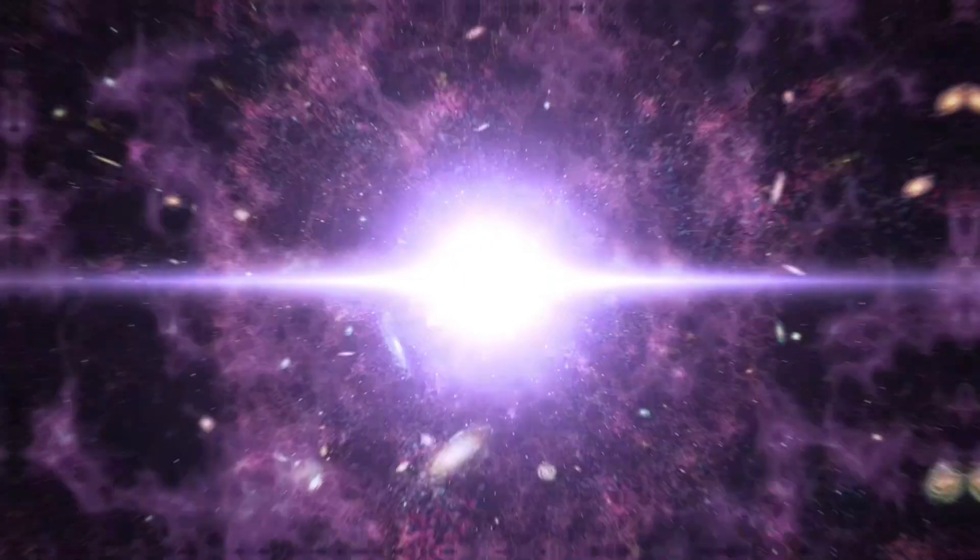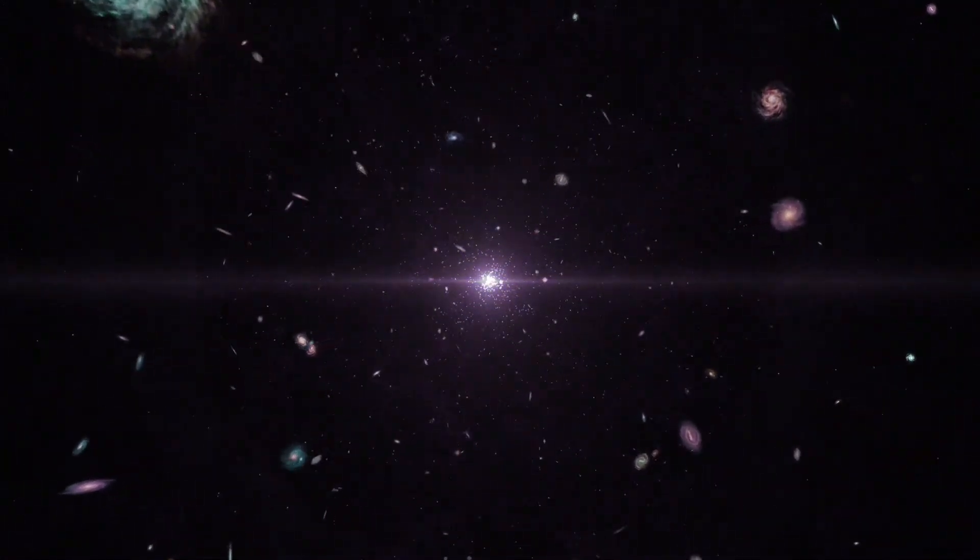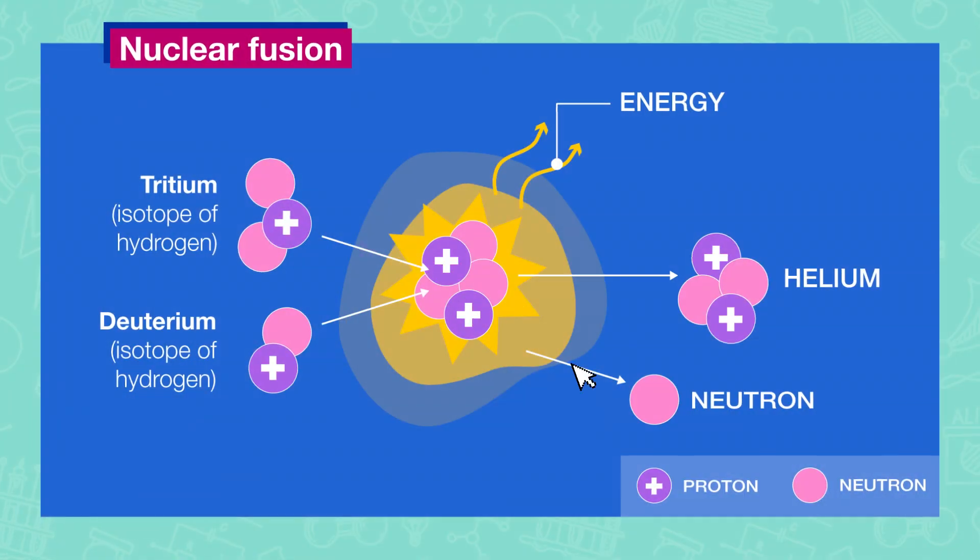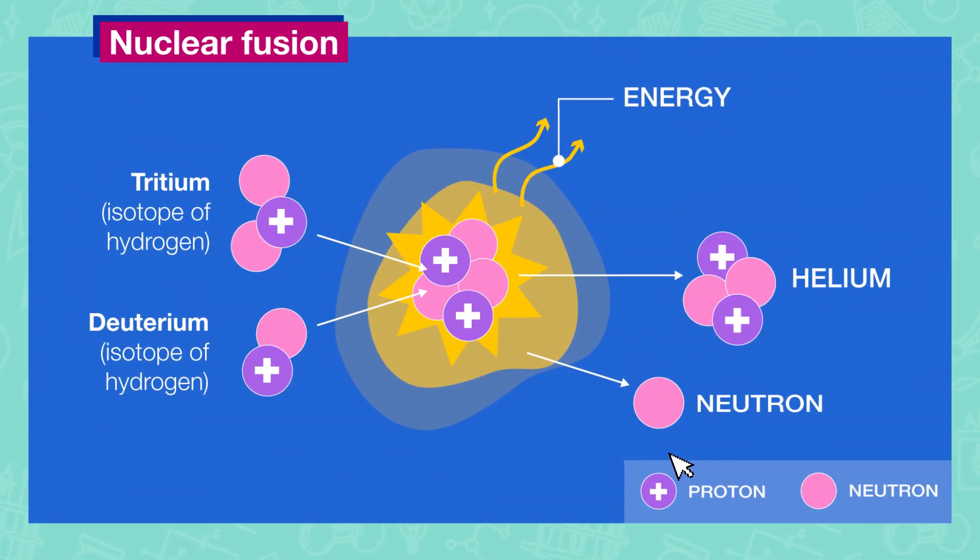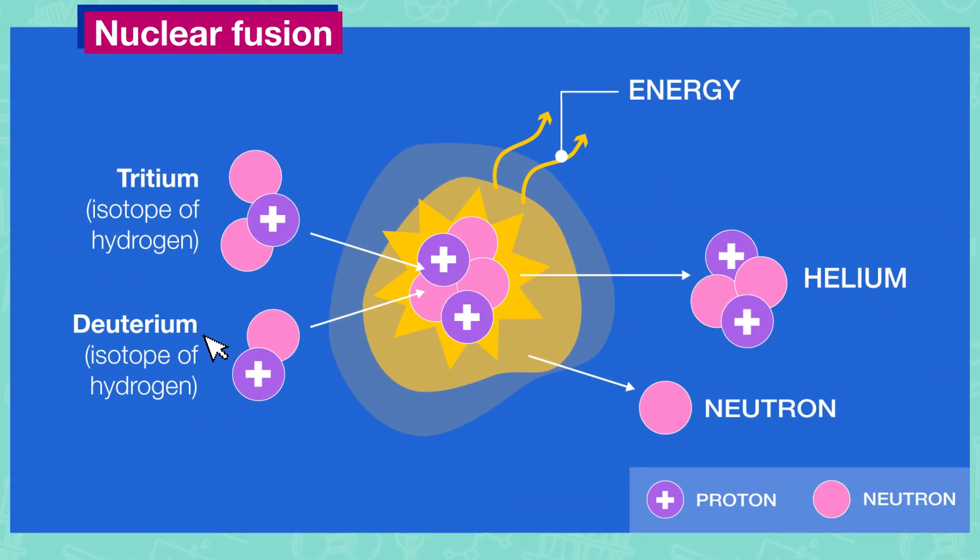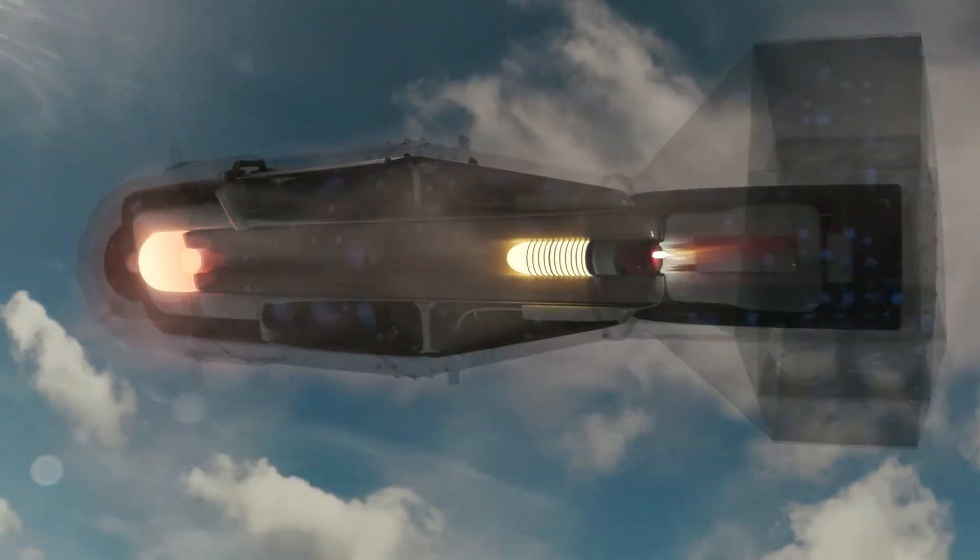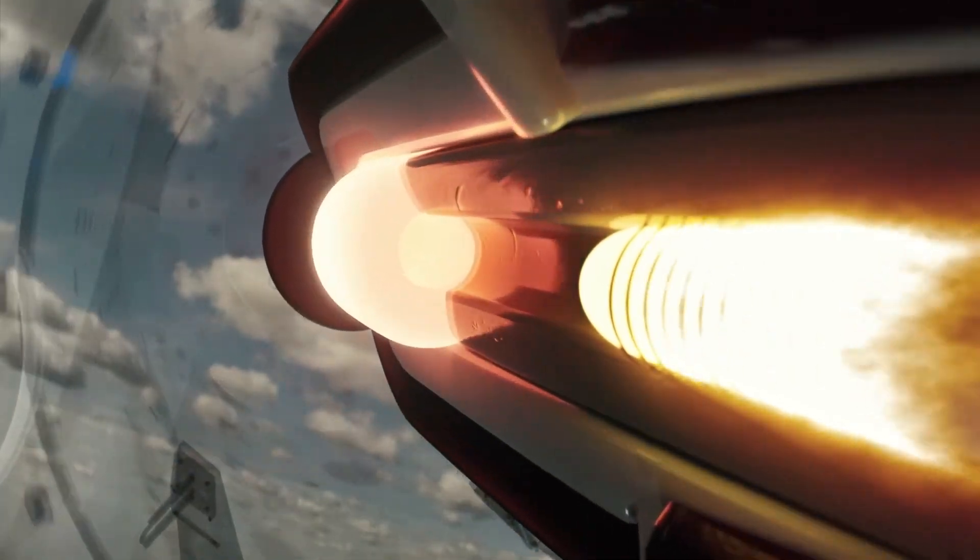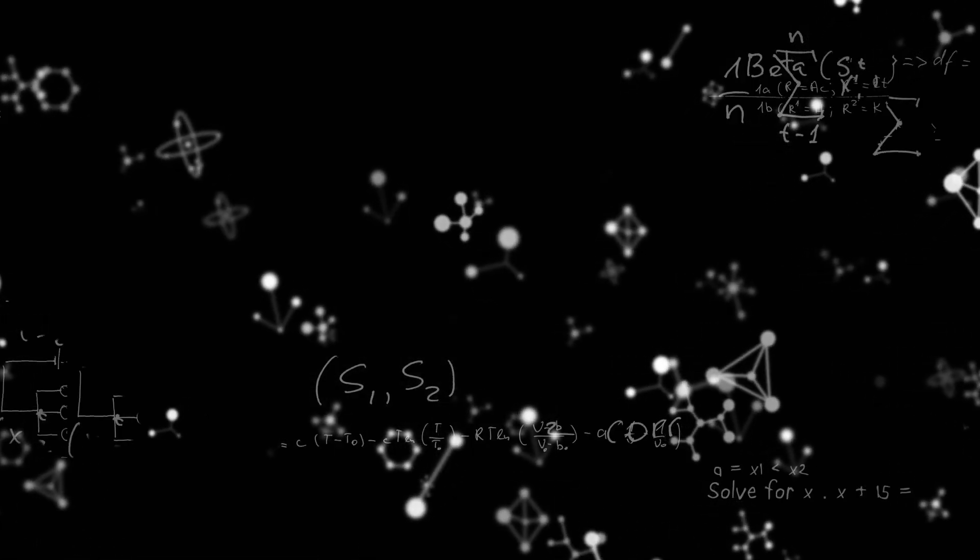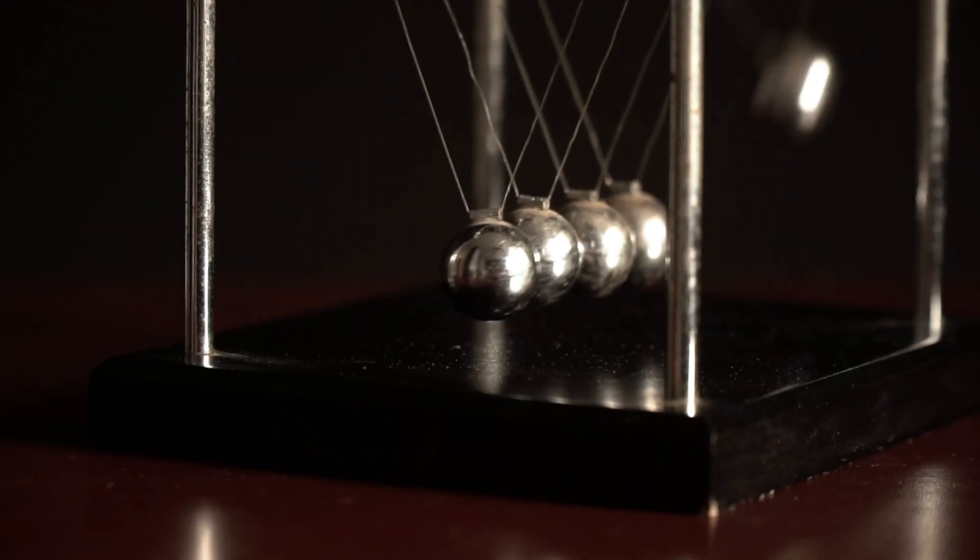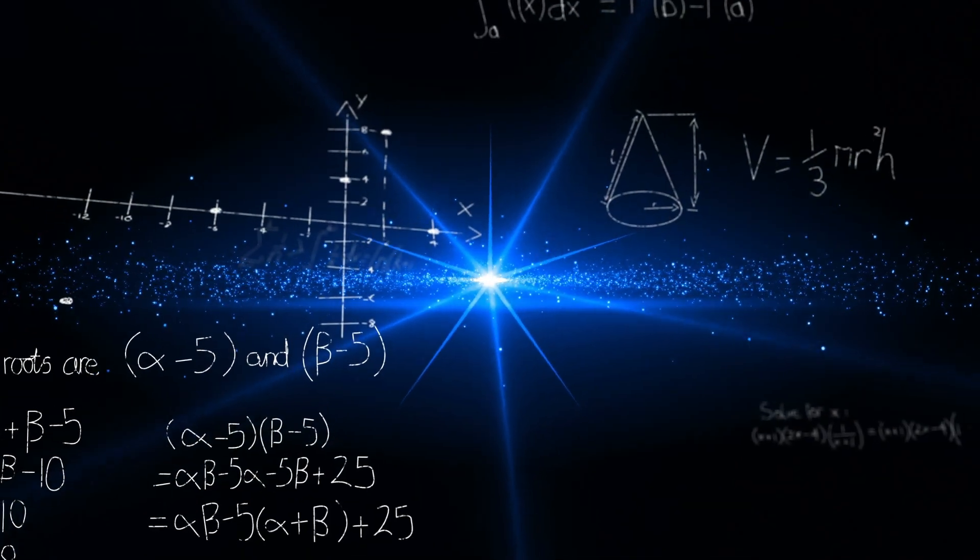When the temperature of the universe dropped to 10 to the power of 10 Kelvin, which occurred about one minute after the Big Bang, protons and neutrons were able to combine to form the nuclei of deuterium, tritium, and helium. This process was similar to what happens in thermonuclear bombs or nuclear reactors. Modern calculations of the amount of light elements in the universe are in good agreement with observations, confirming that the physical laws known to us were in effect from the first seconds of the universe's existence.